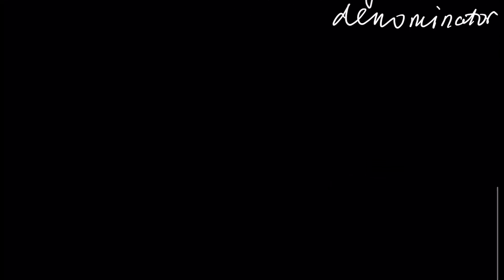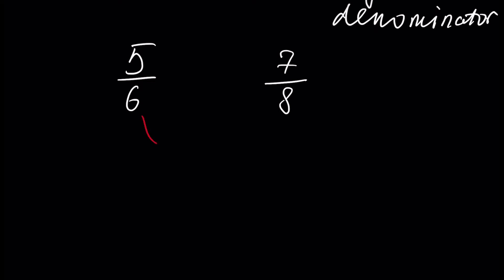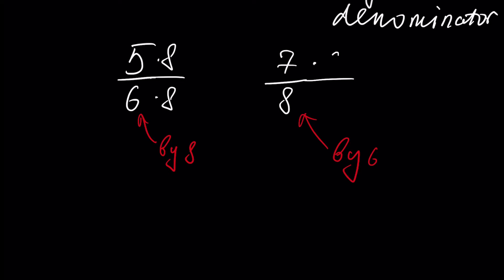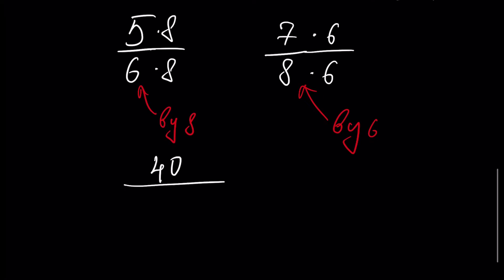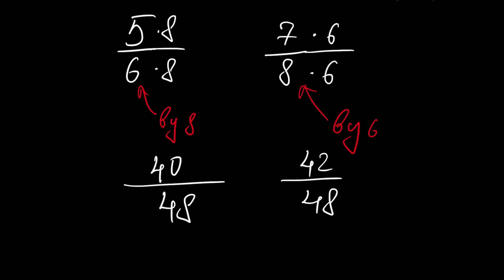Let's give another example and compare 5 over 6 and 7 over 8. We multiply the first fraction by 8 — both sides — and the second fraction is multiplied by 6 — both sides. We get 40 over 48 and 42 over 48. Now we can compare, and of course the second fraction is greater than the first fraction.